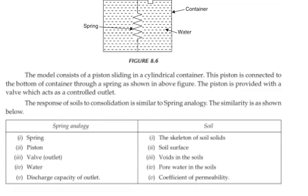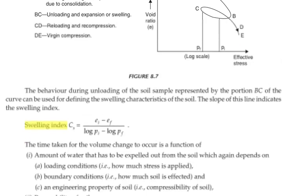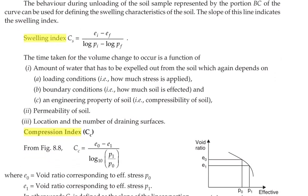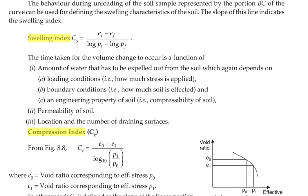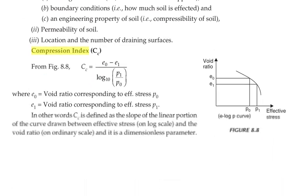Next we are going to see swelling index. The formula for swelling index CS is equal to (EI minus EF) divided by (log PI minus log PF), where EI is the void ratio corresponding to the effective stress PI, and EF is the void ratio corresponding to the effective stress PF.